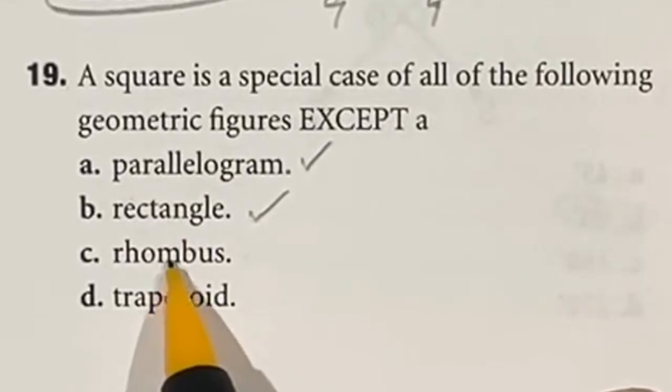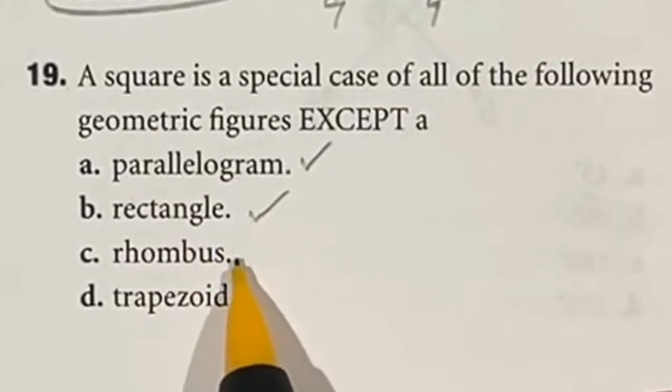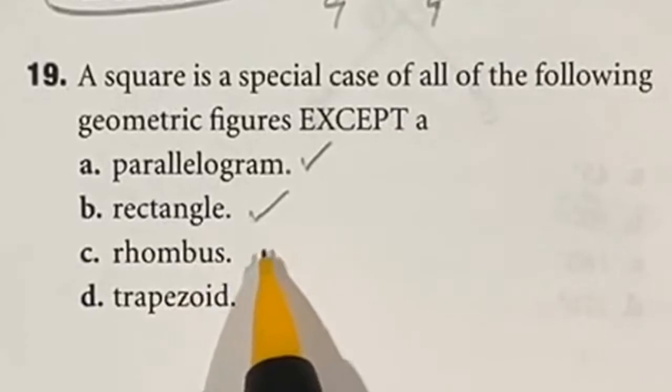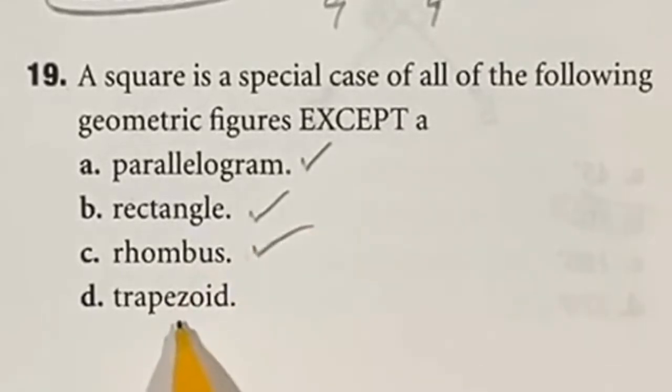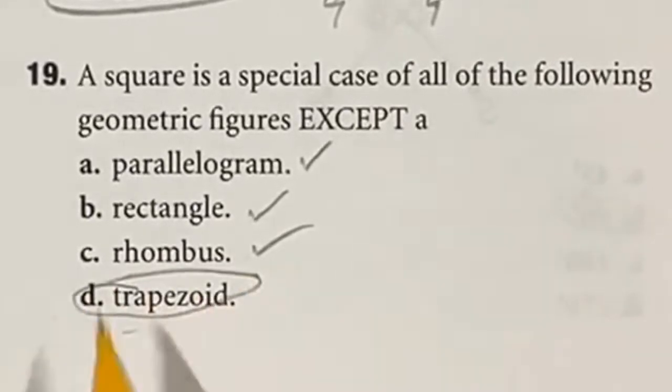Rhombus means that opposite sides are parallel again, but in this case all four sides have to be equal. That is true on a square. A trapezoid means that only one pair of opposite sides are parallel and the other two are not. That actually is false here because both opposite sides are parallel. So D is going to be our answer.